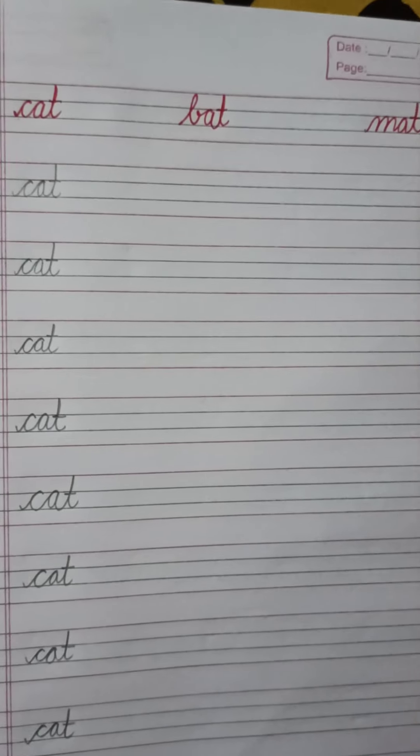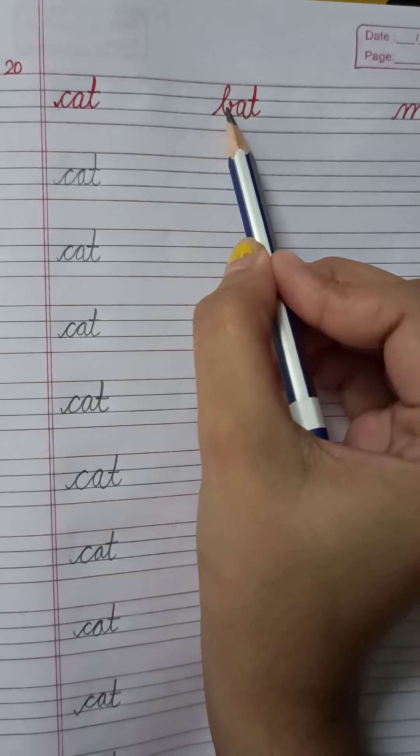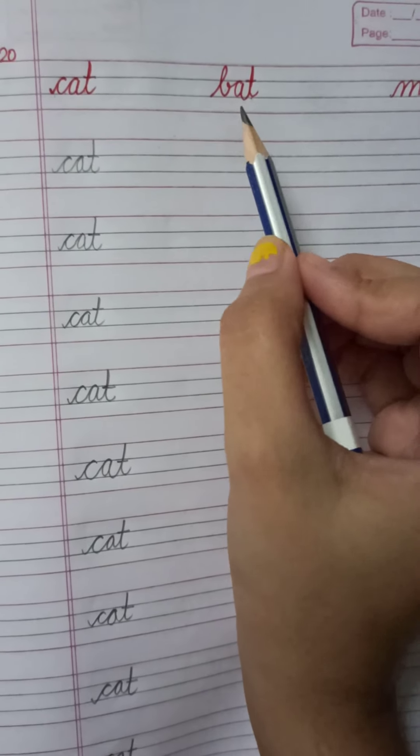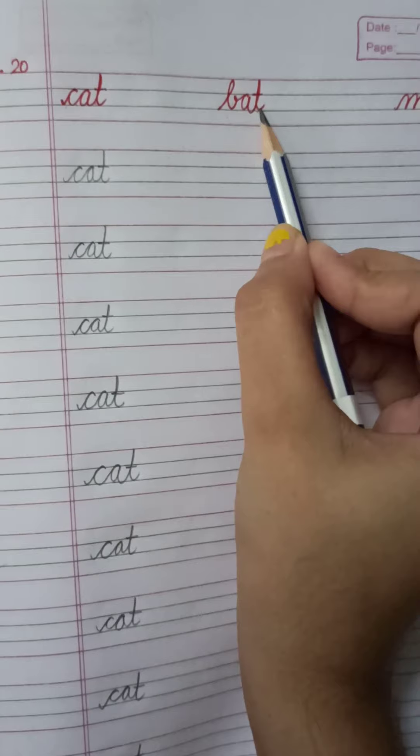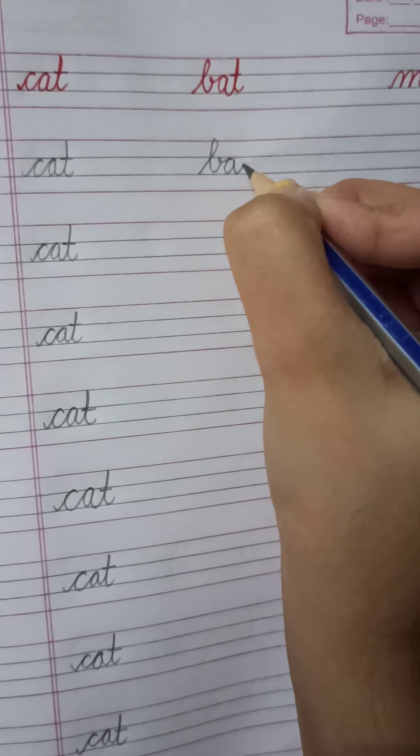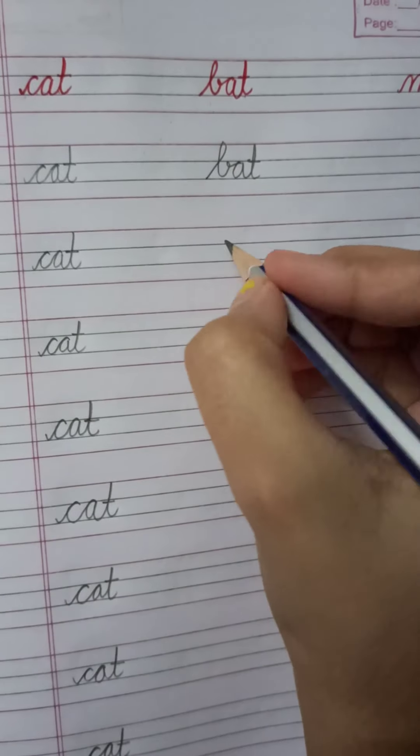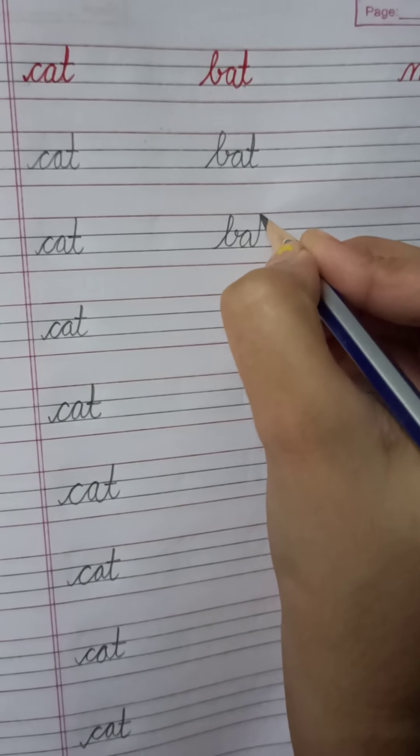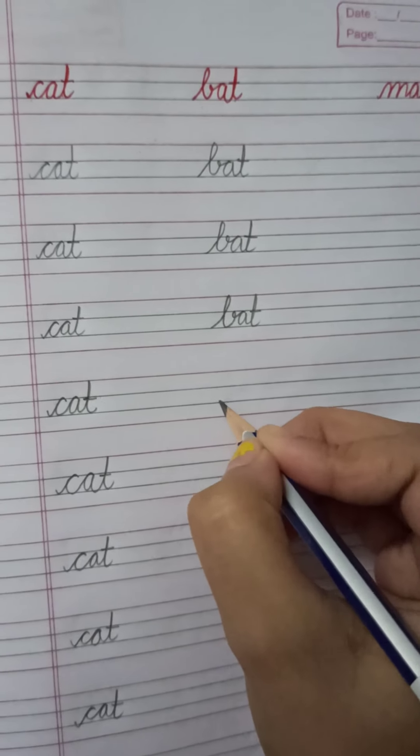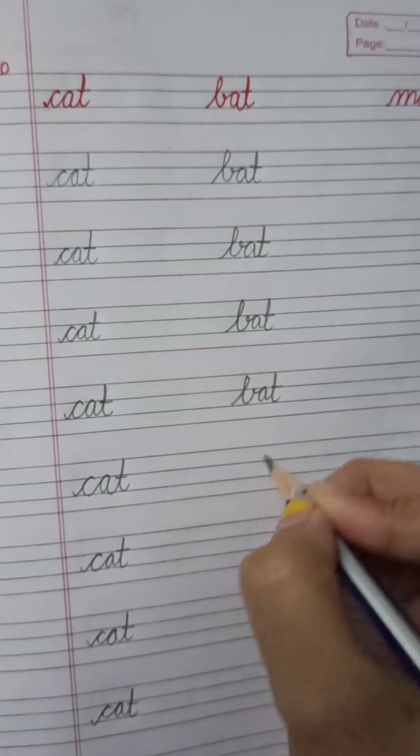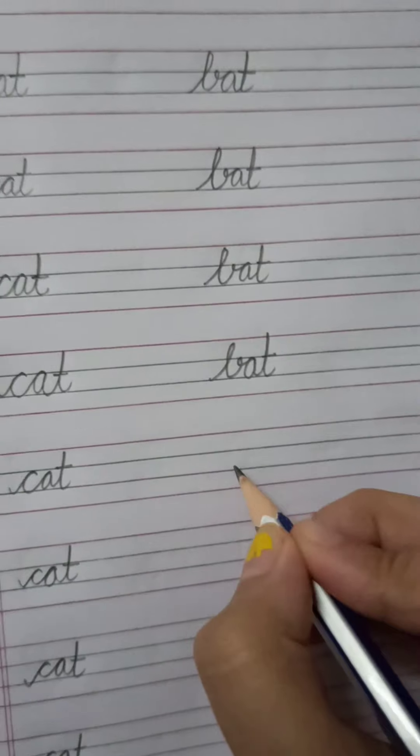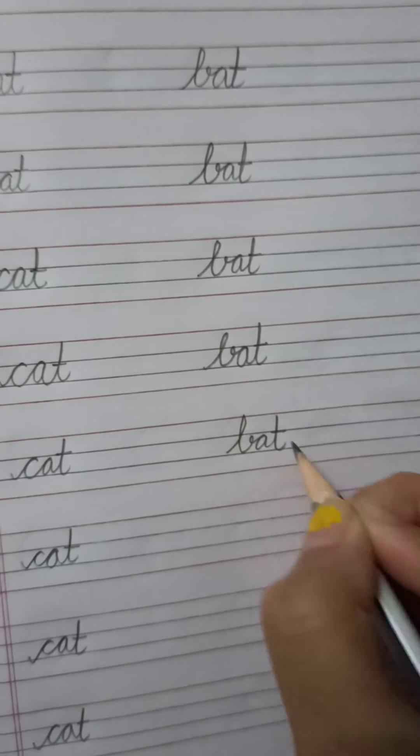Now next word is B-A-T-Bat. किसका sound आ रहा है इसमें? A का. B-A-T-Bat. हम इसे बोल बोल कर लिखेंगे. B-A-T-Bat. इसमें किसका sound आ रहा है? A का sound आ रहा है. B-A-T-Bat. B-A-T-Bat.